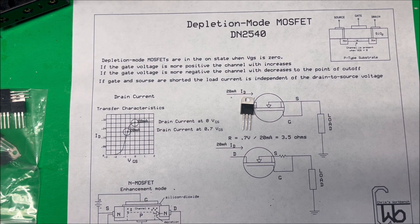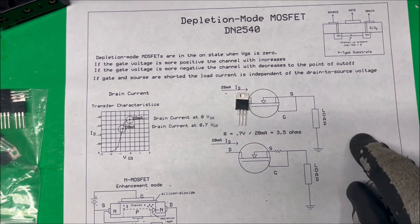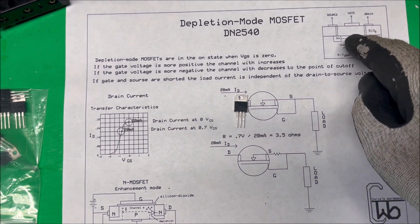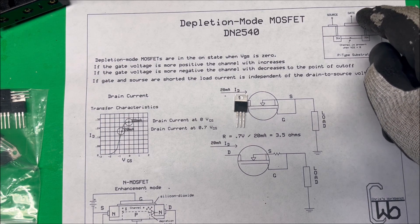These are in the on state when VGS is zero. When your gate source voltage is zero they're on. Here's a diagram of it up here, so this channel is always on when the gate to source is zero.